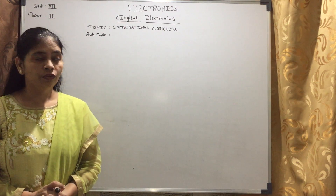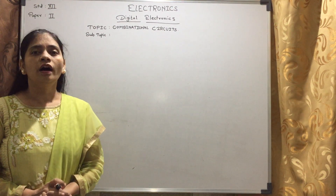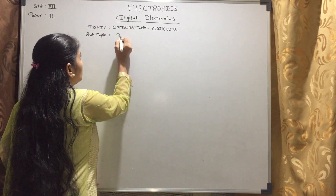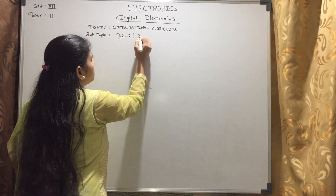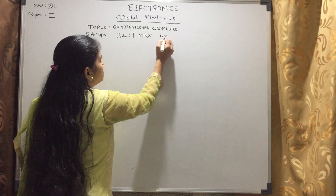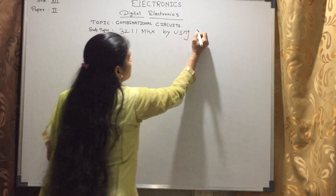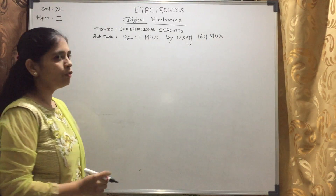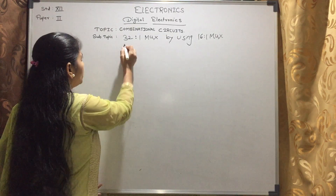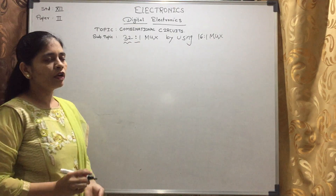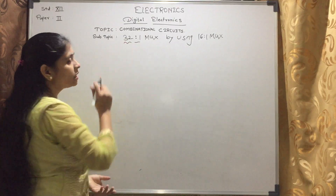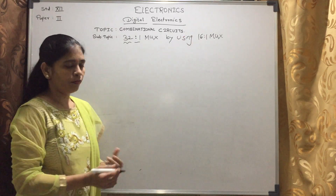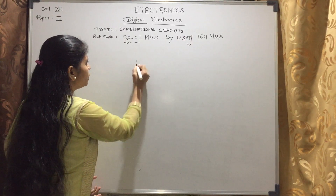Hello students, today we will learn how to derive a 32-to-1 multiplexer by using 16-to-1 multiplexers. A 32-to-1 MUX means there are 32 inputs and 1 output. To achieve this, we are using 16-to-1 multiplexers, so first we have to draw a 16-to-1 MUX.